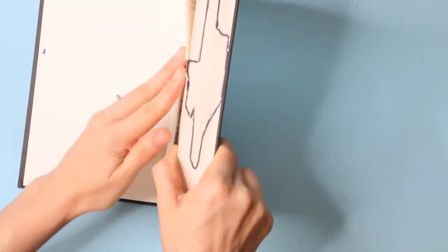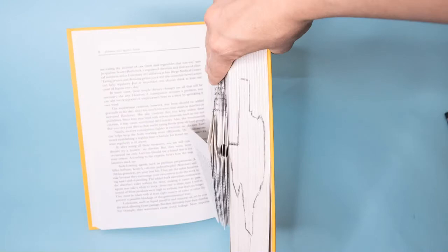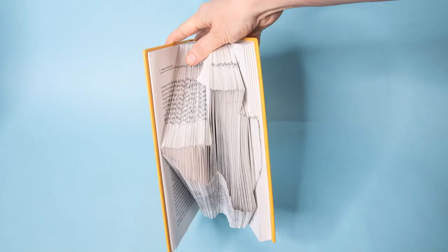You can periodically close the book and turn it to the side to check on your progress. Continue folding all the pages until you reach the end of your design.